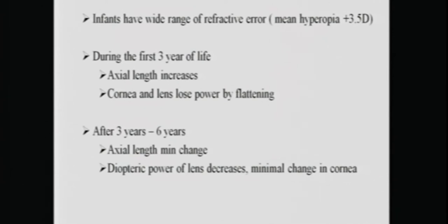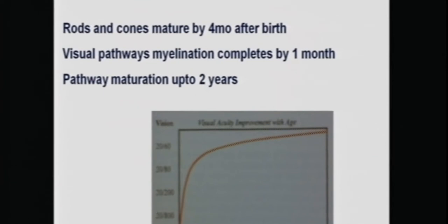Initially there is an increase in the axial length and the cornea and lens lose their power by flattening. By three to six years, although there is not so significant change in the axial length, the dioptric power of the lens decreases with not so many changes in the cornea. So it's the changes in the lens in the three to six years that change the power of the eye and move towards emetropization.